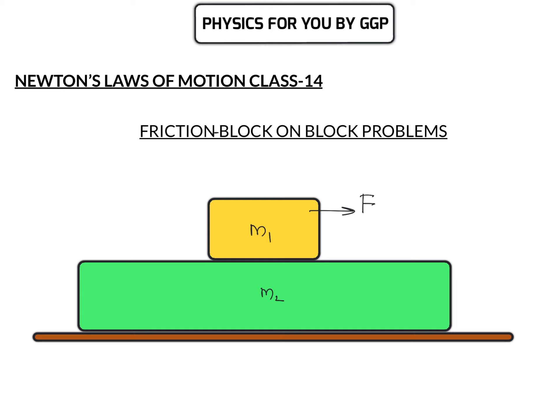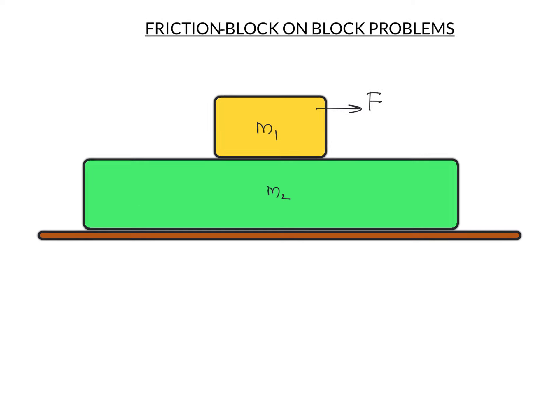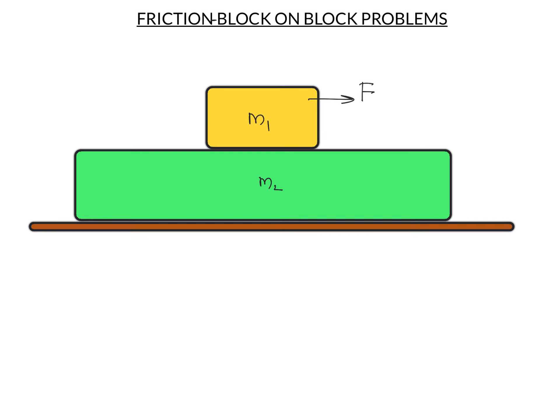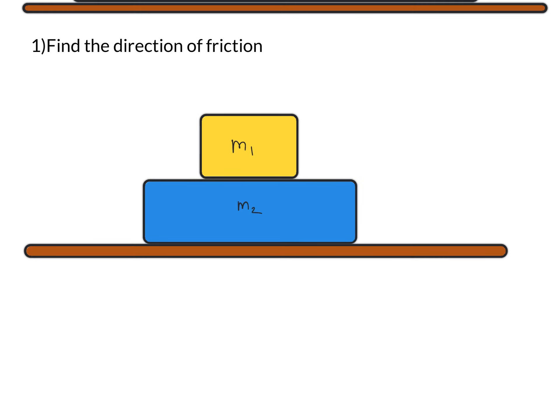To solve such problems we need to follow particular steps. The first step is to find the direction of friction. In the question they will give the direction of the applied force — let's say applied force F is acting on block m1 — and first we need to find the direction of friction acting on different surfaces.